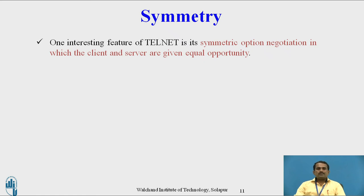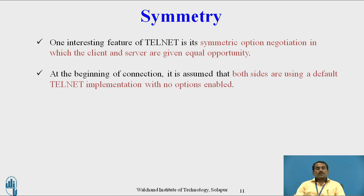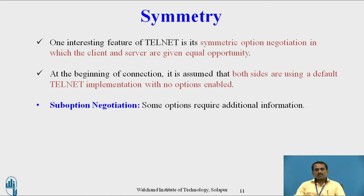Symmetry: one interesting feature of Telnet is its symmetric option negotiation, in which the client and server are given equal opportunity. Both client and server have equal weightage in communication. If transmitting data from client to server and server to client, both users should be active; if any one user doesn't want to communicate, the whole communication will be disconnected. At the beginning of connection, it is assumed that both sides are using a default Telnet implementation with no options enabled.